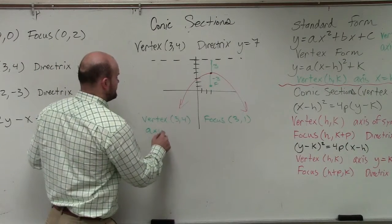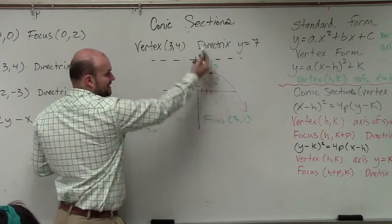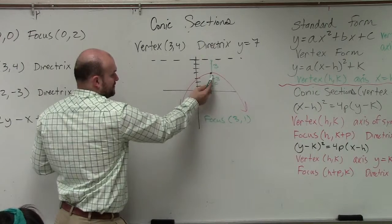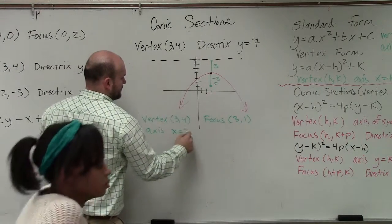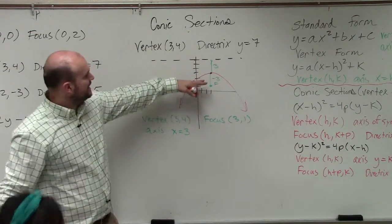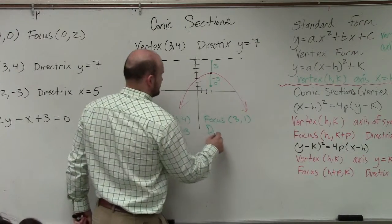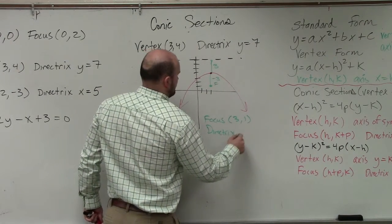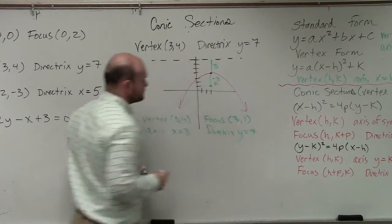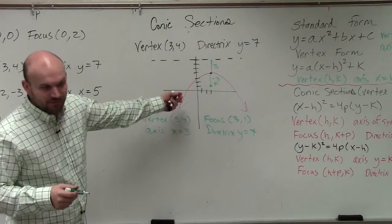The next thing is the axis of symmetry. Axis symmetry is going to be, again, a vertical line at the x coordinate of the vertex, which is 3. And the directrix we already are given the directrix. And then you guys can obviously see the graph opens down.